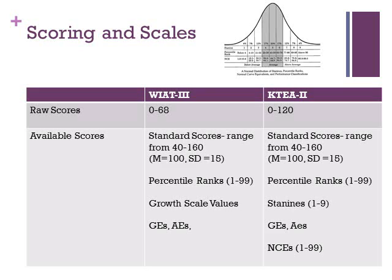For both measures, the standard score scale ranges from 40 to 160 with a mean of 100 and a standard deviation of 15. Examiners can determine status scores — including standard scores, percentile ranks, normal curve equivalents, and stanines — or growth scores, which include grade equivalents, age equivalents, and growth scale values.